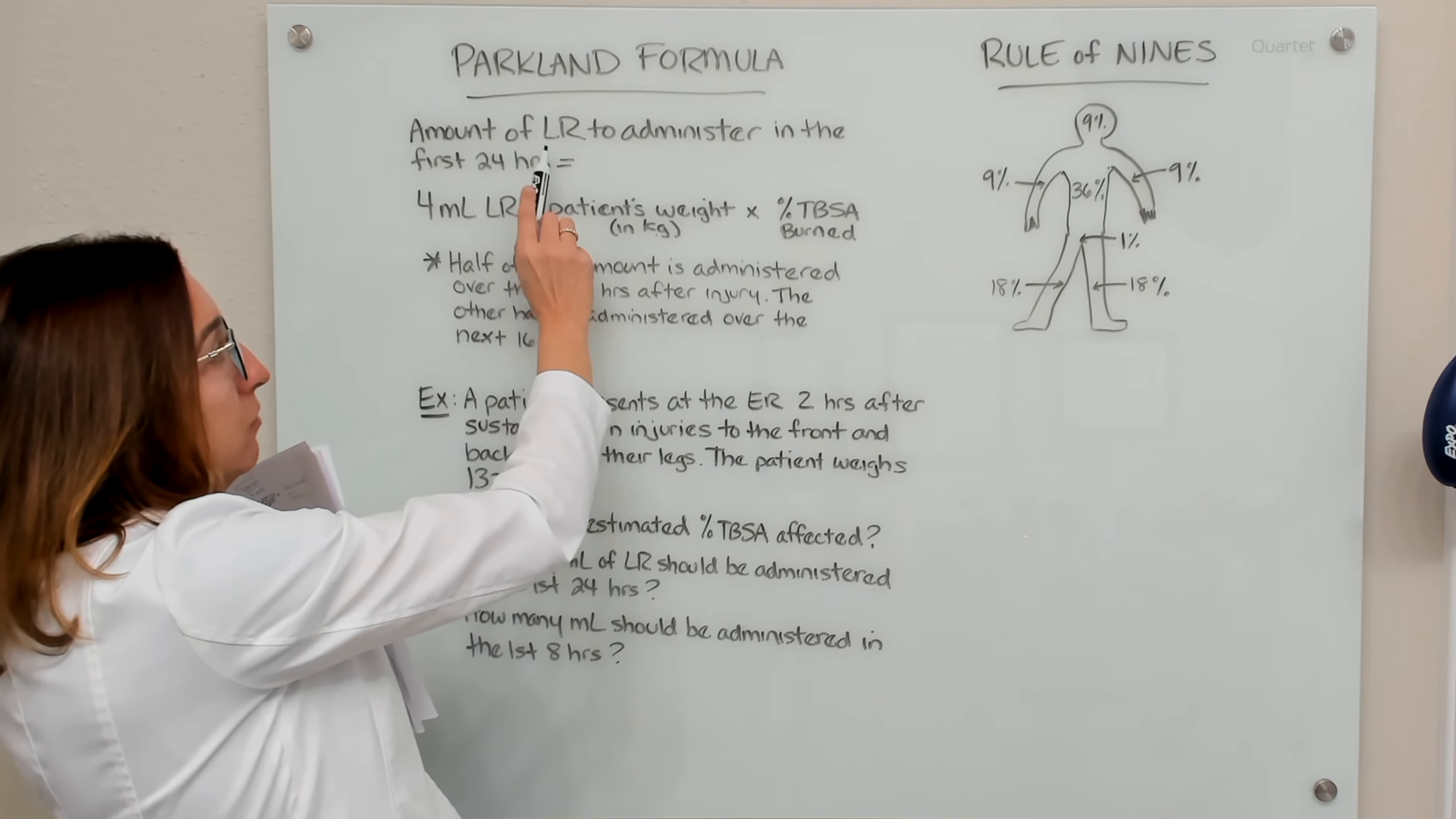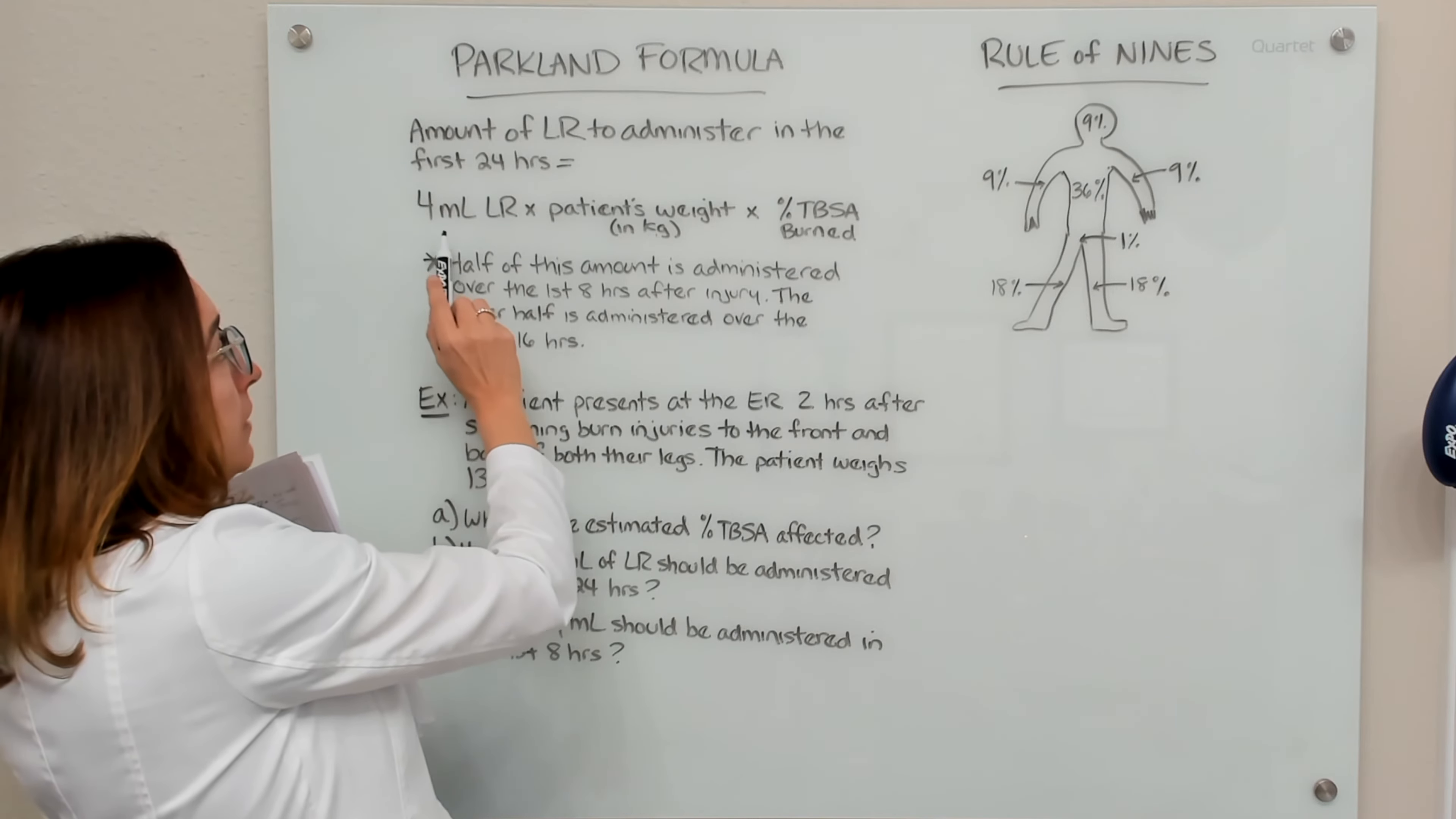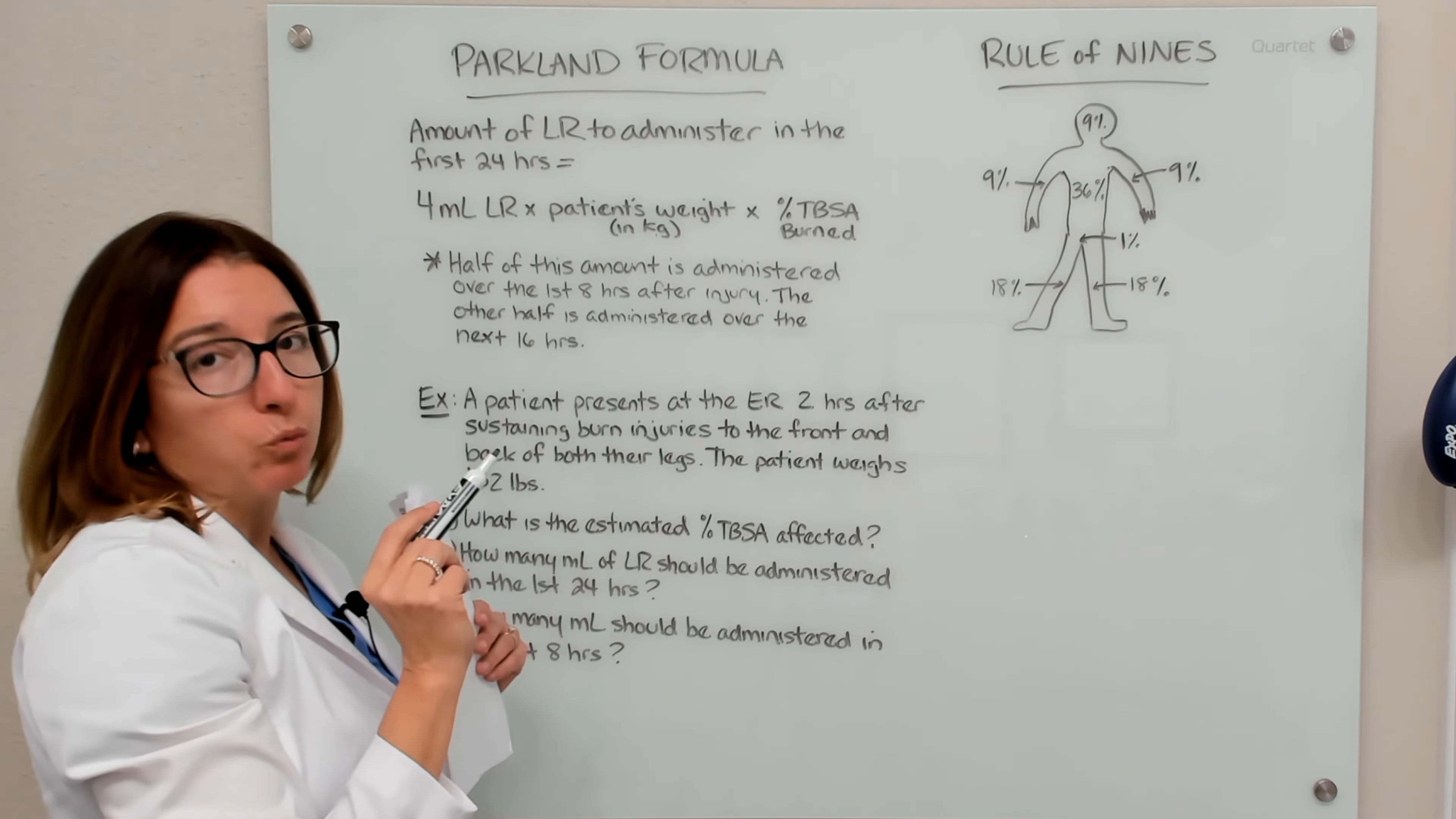the amount of lactated ringers that we need to administer to the patient in the first 24 hours is 4, so 4 milliliters of lactated ringers, times the patient's weight in kilograms, times the percentage TBSA burned, which we estimate with the rule of nines.